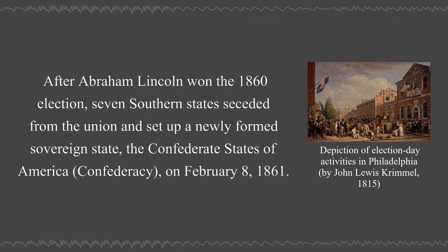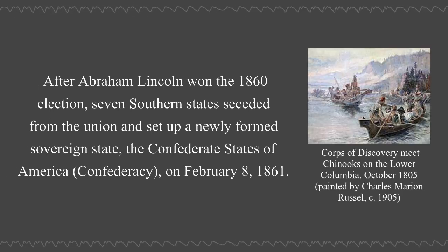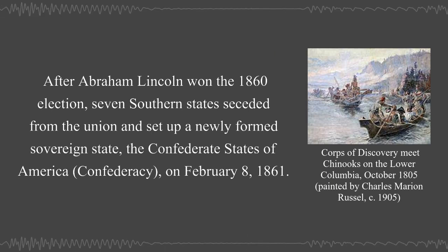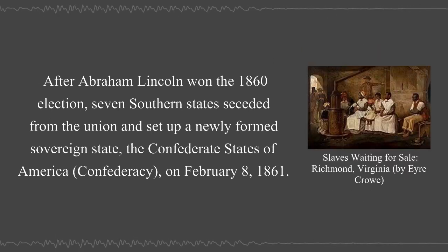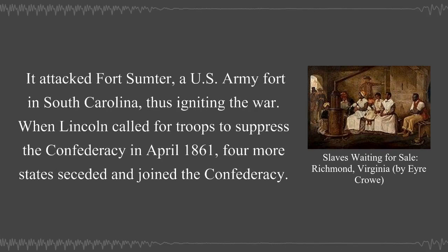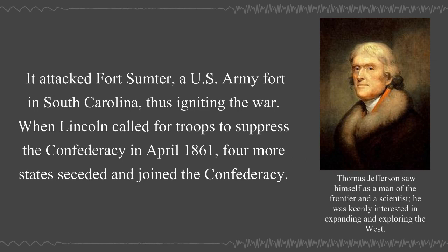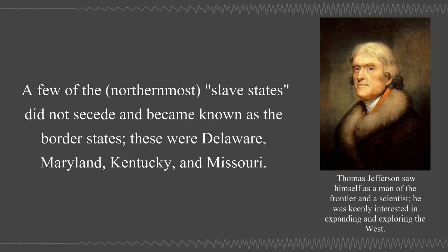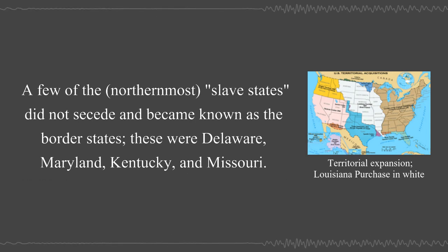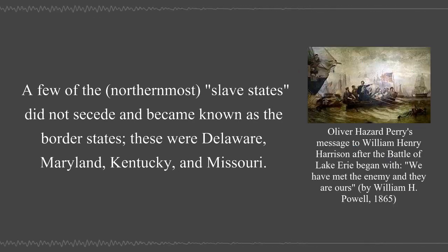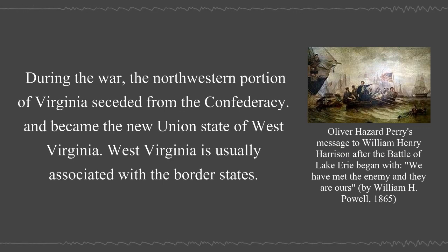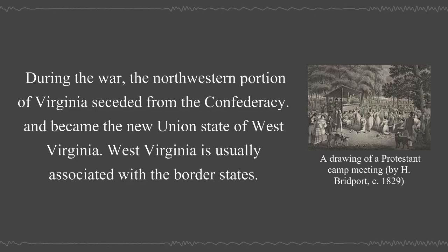After Abraham Lincoln won the 1860 election, seven Southern states seceded from the Union and set up the Confederate States of America on February 8, 1861. It attacked Fort Sumter, a U.S. Army fort in South Carolina, thus igniting the war. When Lincoln called for troops to suppress the Confederacy in April 1861, four more states seceded and joined the Confederacy. A few of the northernmost slave states did not secede and became known as the Border States—Delaware, Maryland, Kentucky, and Missouri. During the war, the northwestern portion of Virginia seceded from the Confederacy and became the new Union state of West Virginia.